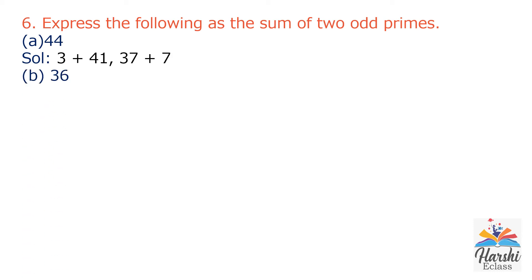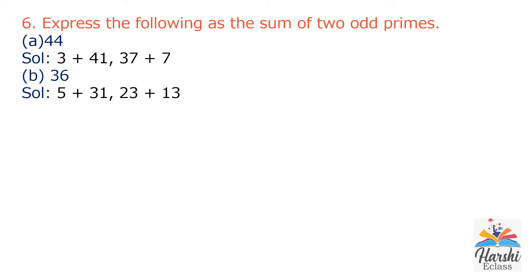Part B: 36. We can write 36 as 5 plus 31 — both are prime numbers. Also 23 plus 13, whose sum is also 36, and both 23 and 13 are prime numbers. Part C: 24. We can write 24 as 7 plus 17. Both 7 and 17 are prime numbers. Another option is 19 plus 5 — both are prime numbers and 19 plus 5 equals 24.